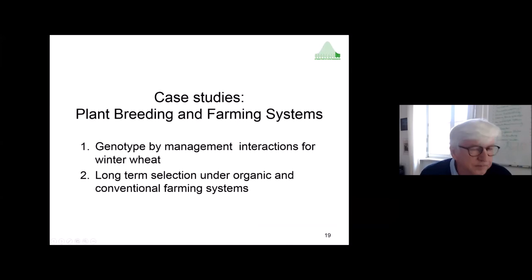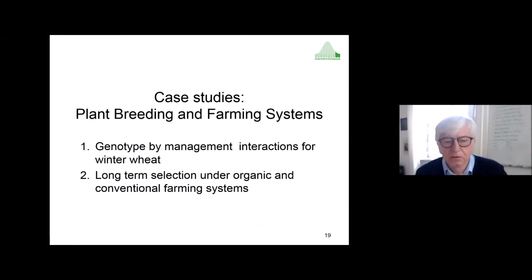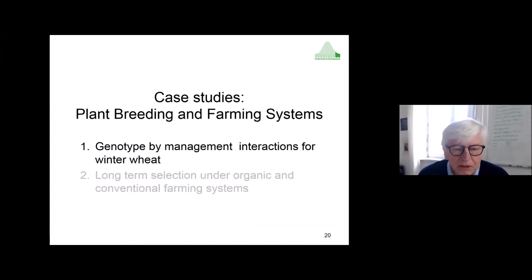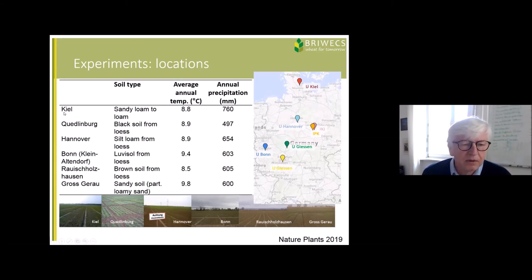I'd like to continue with two other studies combining plant breeding and farming systems. Genotype-by-management interaction was a major focus of the first study. Together with other groups in Germany, we conducted a large trial on winter wheat across several locations: Kiel, Quedlinburg, Hannover, Bonn, Roche, Schatzhausen, and Groß-Gerau, with different soil types.